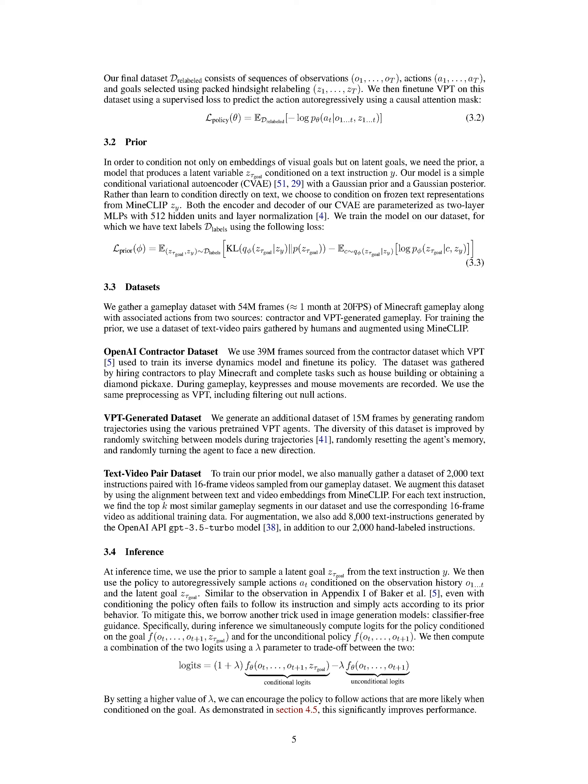We trained our model using our dataset with text labels. The loss function measures the difference between the predicted and actual values of the goal-trajectory embedding given the text embedding. We collected a gameplay dataset with 54 million frames, roughly equivalent to one month of Minecraft gameplay at 20 frames per second. This dataset includes associated actions from two sources: contractor and VPT-generated gameplay. For training the prior, we used a dataset of text-video pairs collected by humans and enhanced using MineClip.